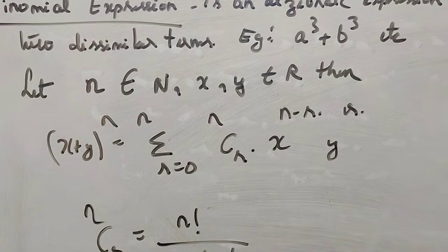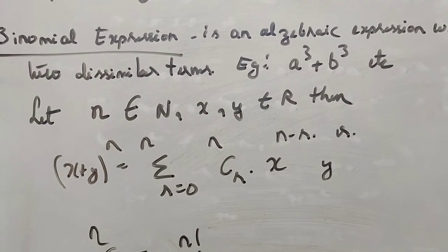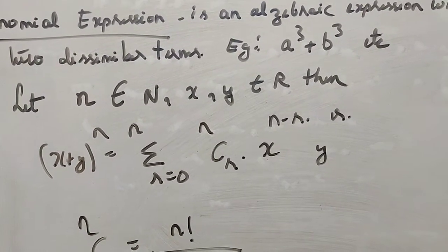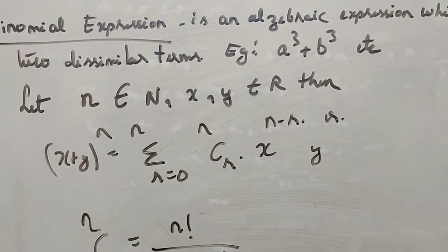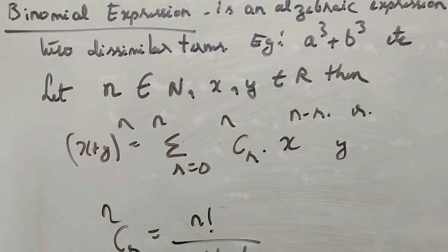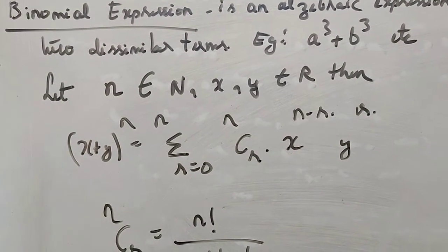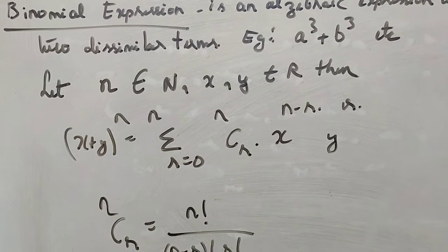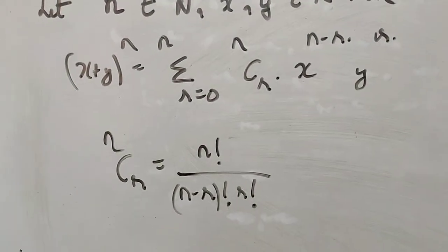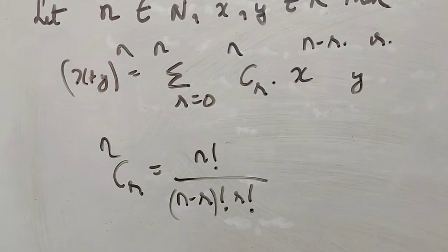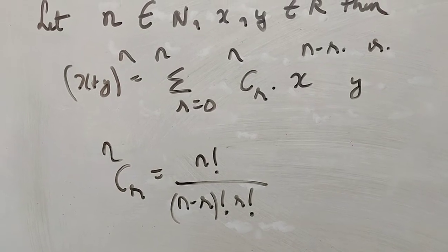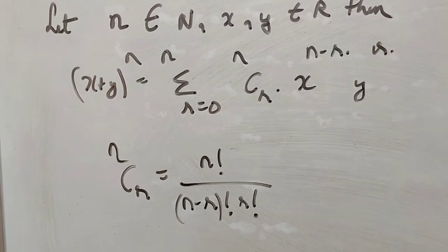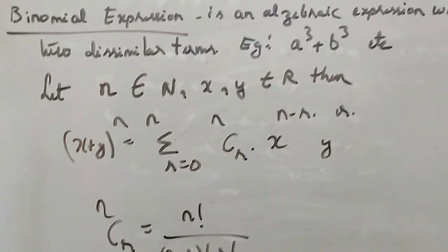nCr times x to the power n minus r, times y to the power r. The nCr you have seen in permutation and combination. It is n factorial divided by n minus r factorial into r factorial.